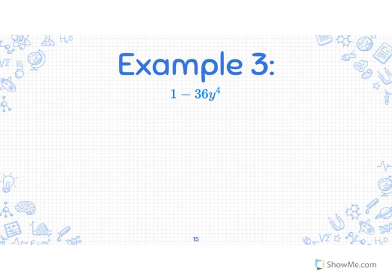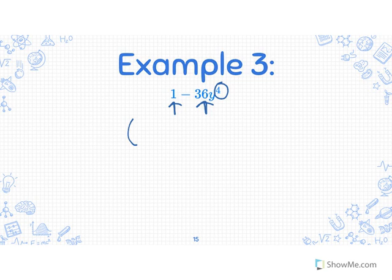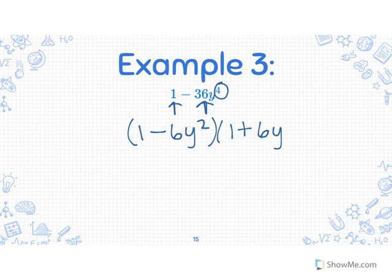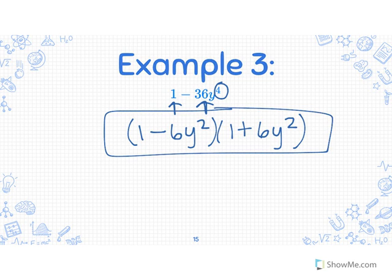Our last example: we have two terms again. 1 times 1 is a perfect square, 36 is a perfect square (6 times 6), and y squared is an even exponent. So we write the coefficients: (1 minus 6y squared)(1 plus 6y squared). You just have to follow the formula — write the first value, second value — and we'll get lots of practice with this.